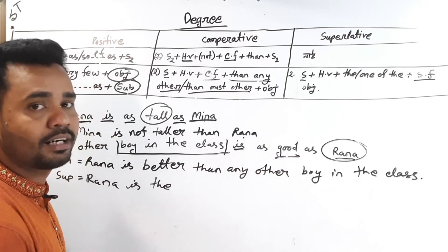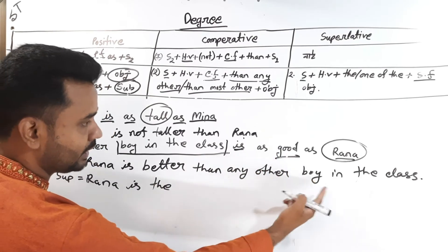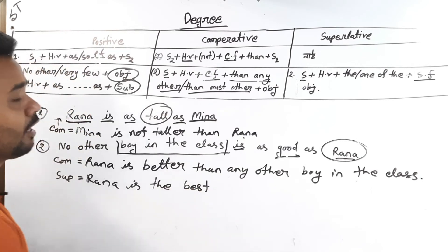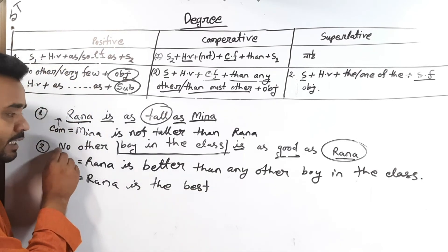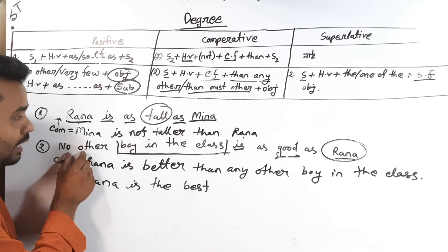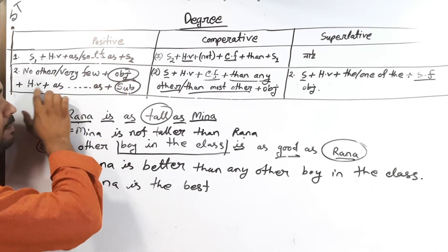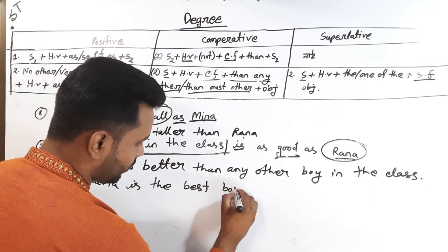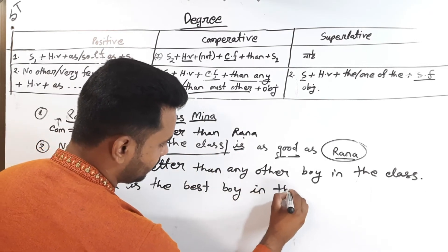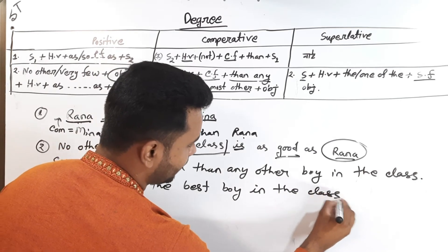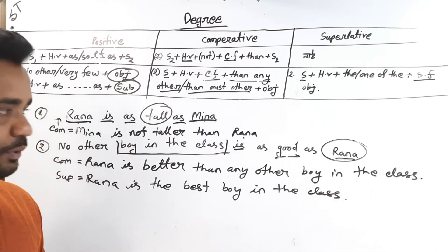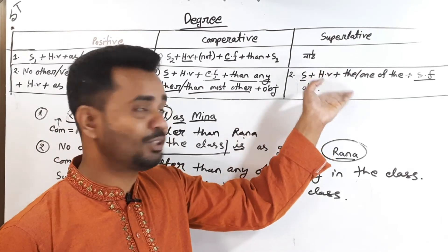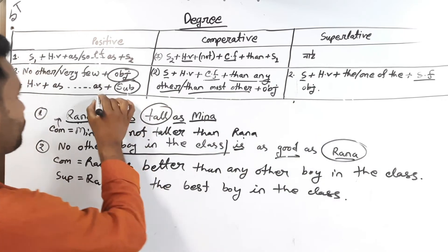Good — superlative. Good is comparative is 'better', and superlative is 'best'. The objective is no other or verify or help. So no other or help — boy in the class. Here's our question. What is this? How can you do it? Superlative is positive.